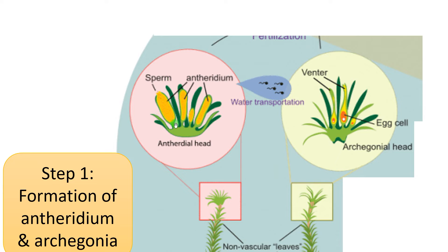This is the anthridium. Anthridium has a stalk, then there is a club-shaped structure. The outer wall is called the jacket layer — a single layer of cells. Inside, androcyte mother cells divide and form androcytes that form the male gametes — biflagellated male gametes or sperm cells.